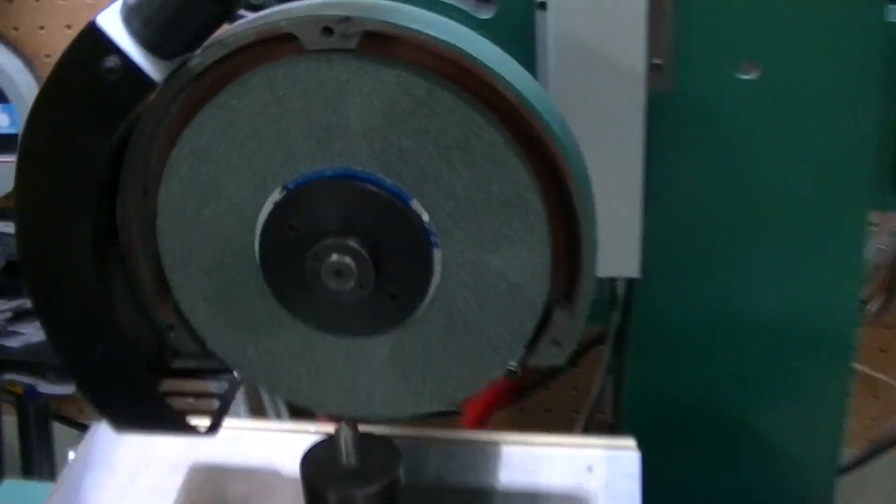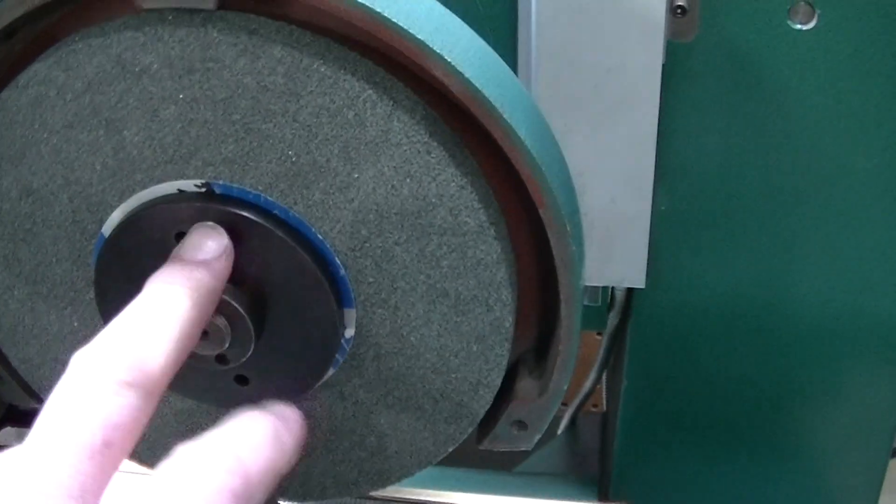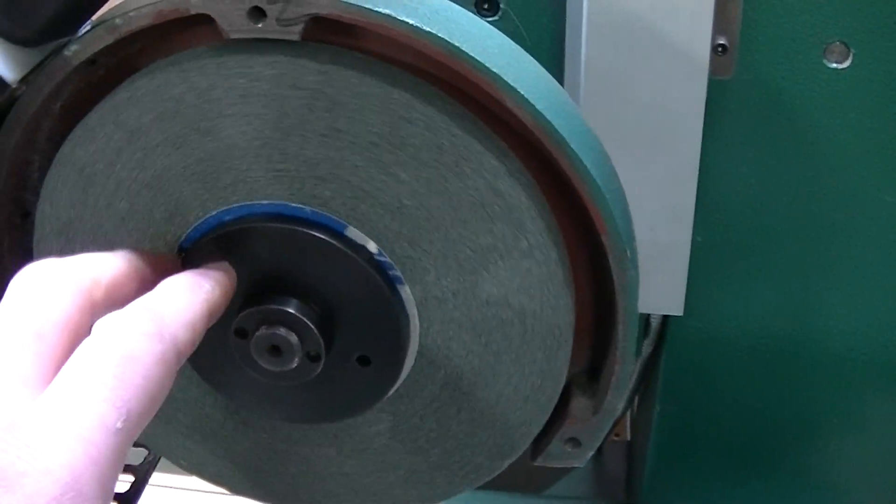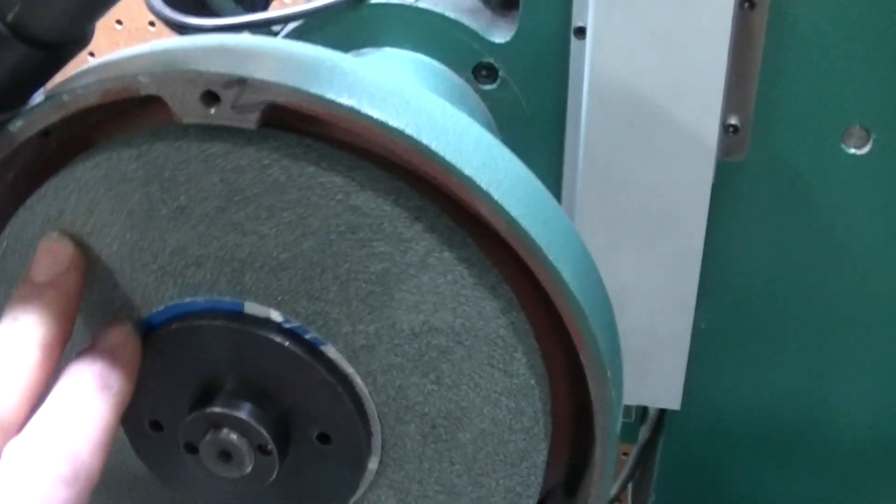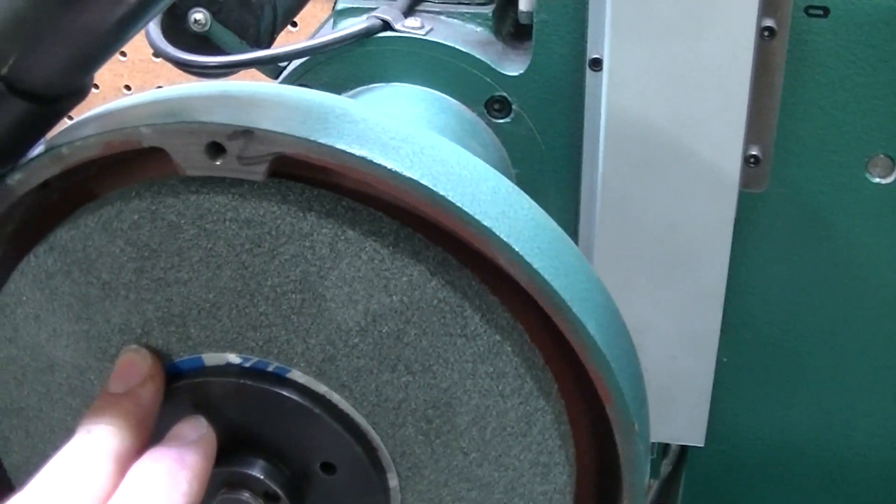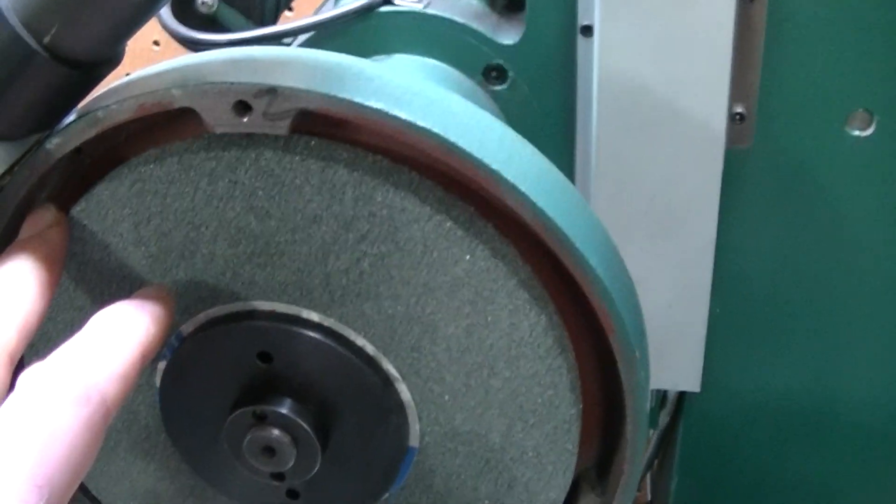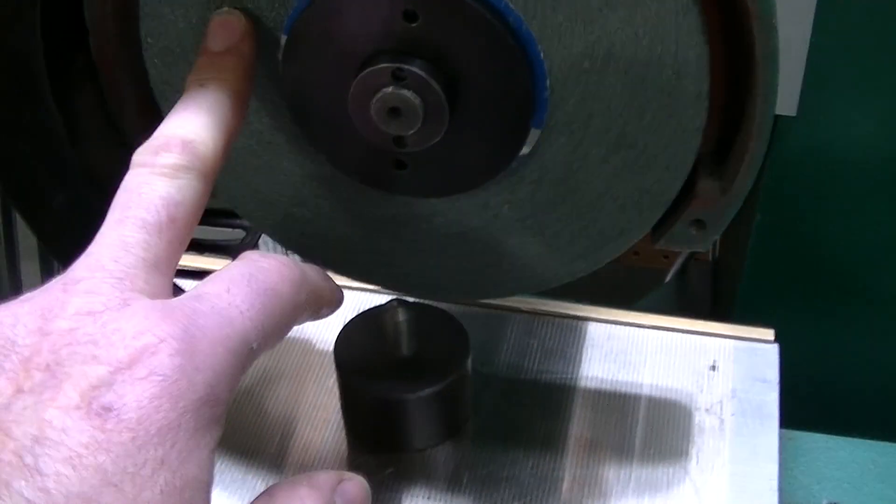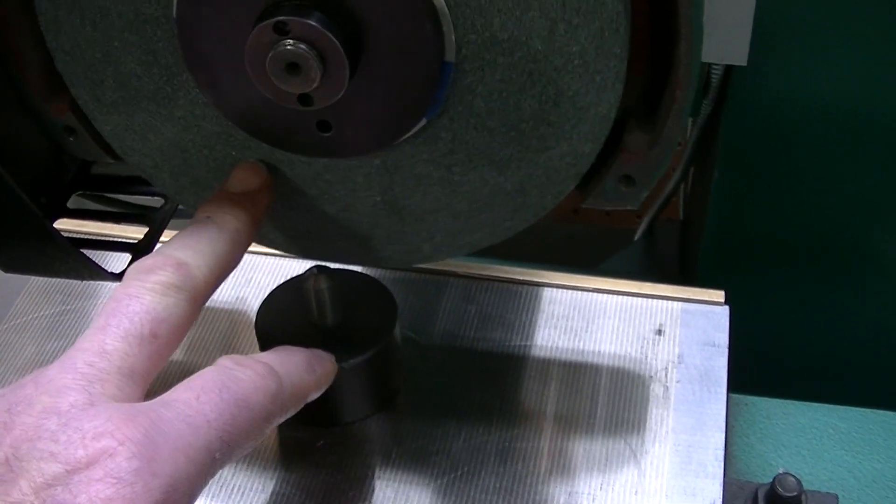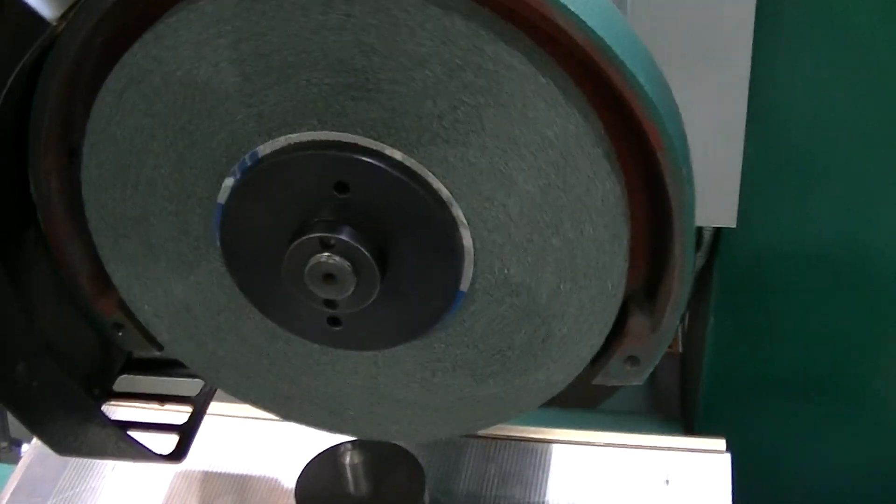This is a Norton silicon carbide wheel - I think it's called N39 or something along those lines. I'm going to be using this wheel to try to do something I didn't think was possible, and that is to surface grind aluminum. I got this idea from Robin Renzetti.